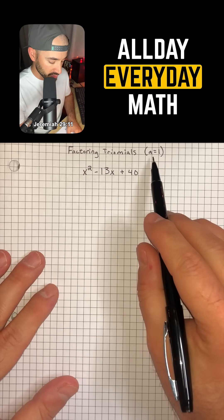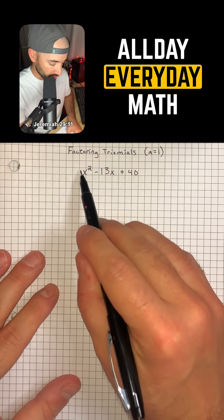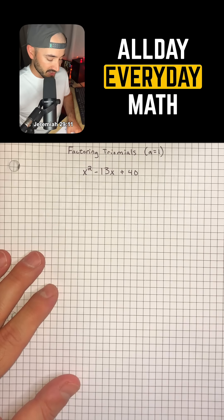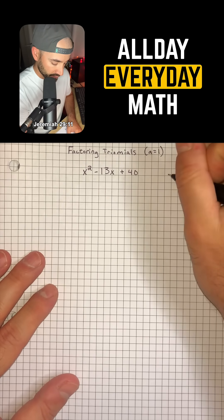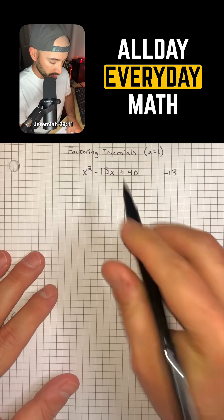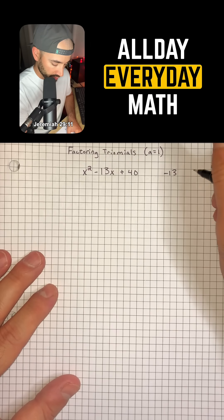So the way that we factor trinomials whenever we just have a coefficient of 1 in front of x squared is we're going to look at two things. We're going to look at this middle term which is negative 13 and we're going to look at this last term which is positive 40.